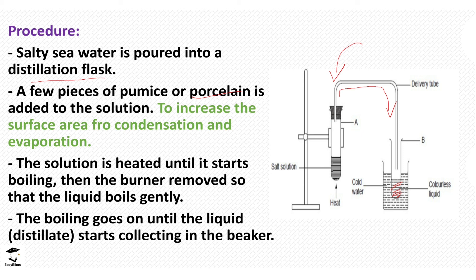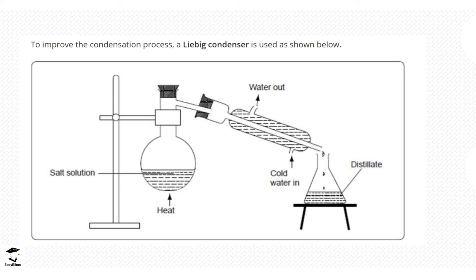The Liebig condenser contains two pipes — there is a water-in pipe and a water-out pipe. It is important to notice where the water in and water out are. Naturally, we would think water should enter from the top and exit from the bottom following gravity, but if that happens the water passes too quickly and does not give the vapors in the tube enough time to condense.